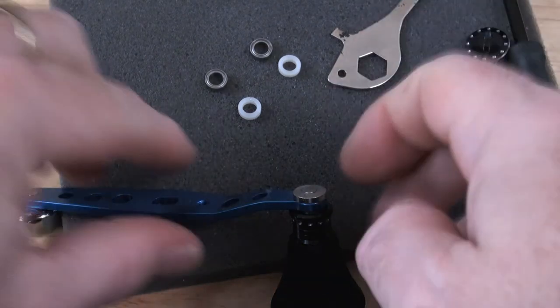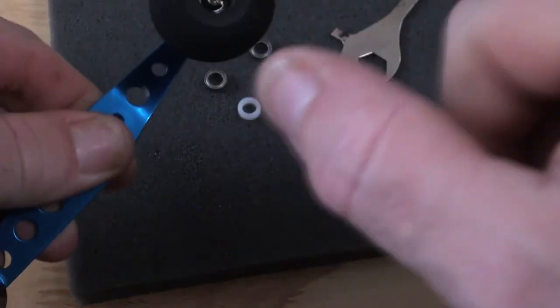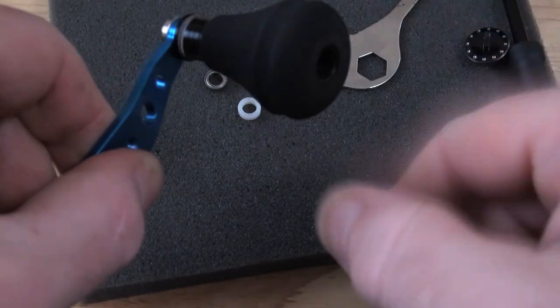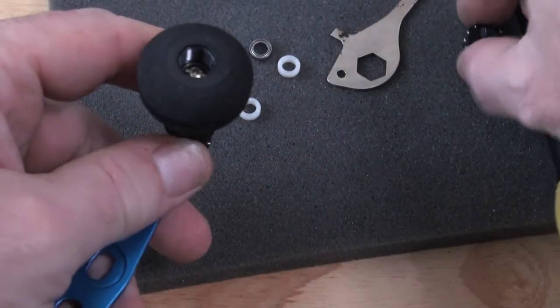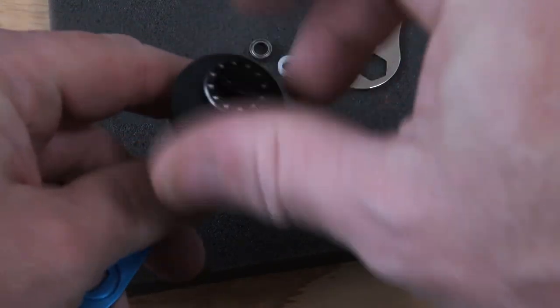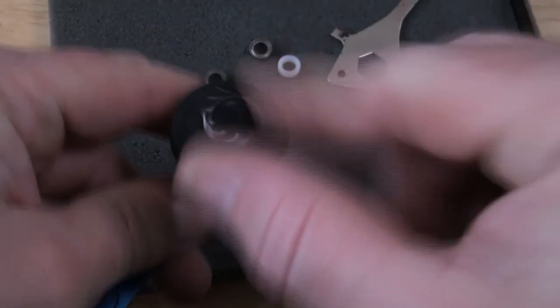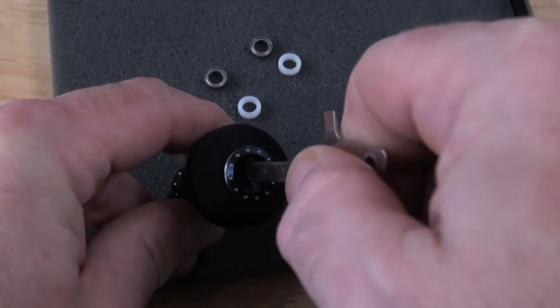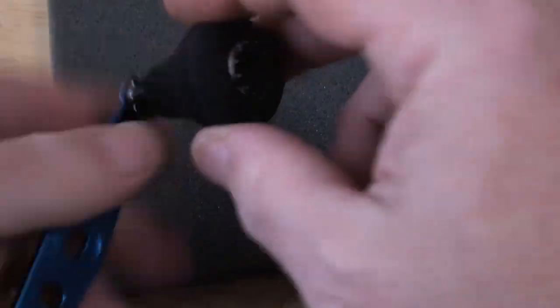And there's the bearings that have gone in. So it's now very, very smooth bearing handle. And all you've got to do then is just put the cover back on, nip it up. Like that, there you go.